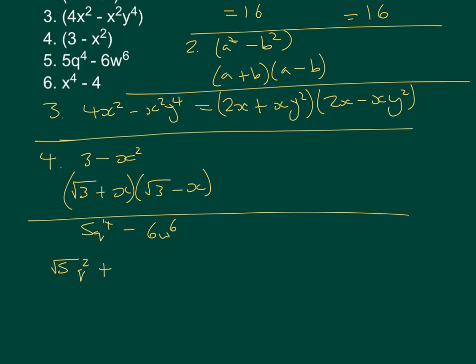And we're going to add that to the square root of the next one, which is √6w³. And then put a take away sign in between those two.